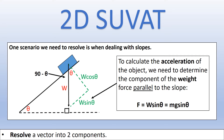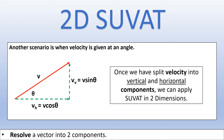Once we know the force parallel to the slope, we can work out the acceleration parallel to the slope. The next scenario is when properties are given at different angles. In projectile motion, we split velocity into vertical and horizontal components: the vertical component of velocity is V sin θ and the horizontal component is V cos θ.